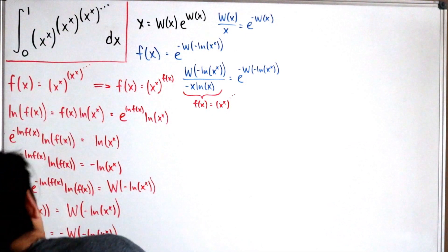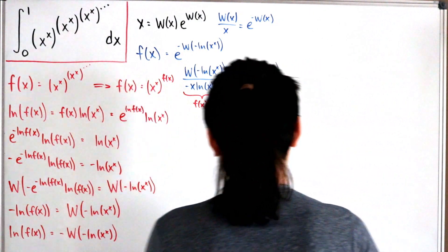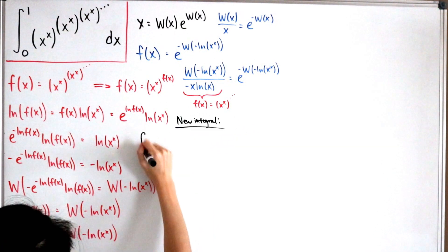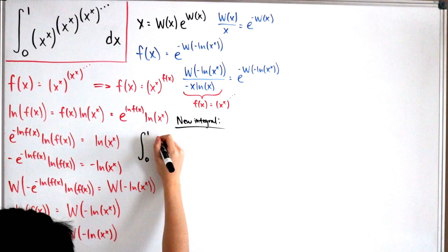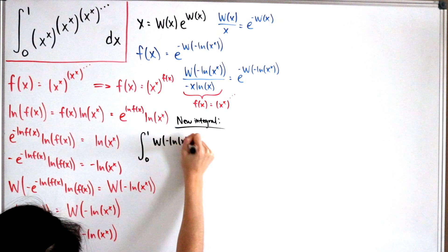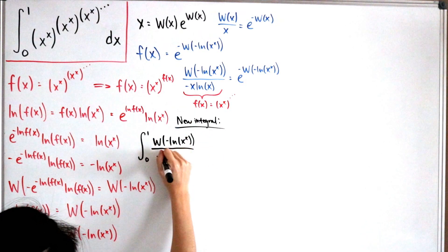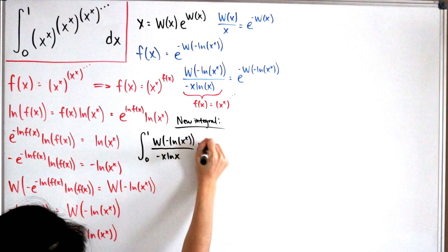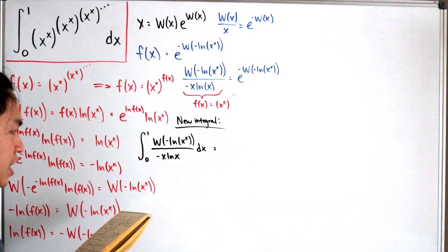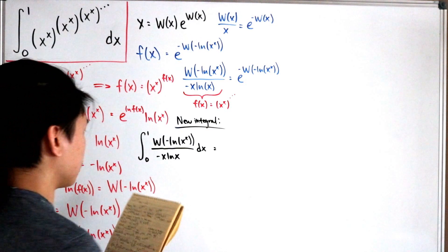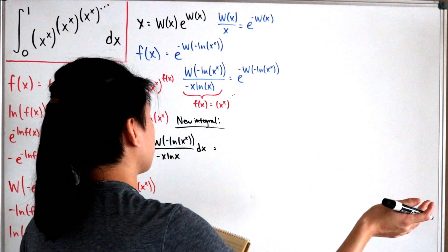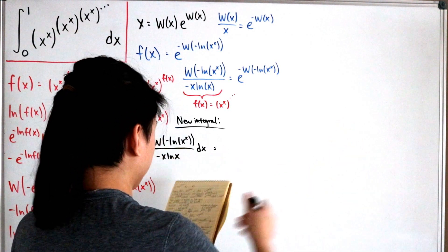Now we have the substitution to put back in. Our new integral from 0 to 1 becomes: W of negative ln(x^x), divided by negative x times ln(x), dx. The Lambert W function has a Taylor series expansion achieved using the Lagrange inversion theorem, which gives the Taylor series of the inverse of an analytic function.